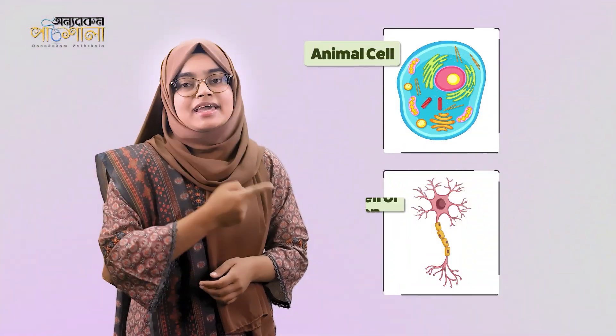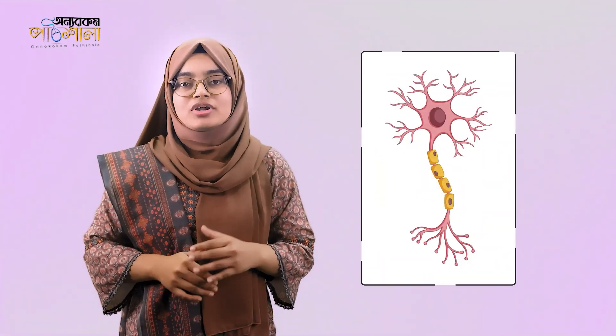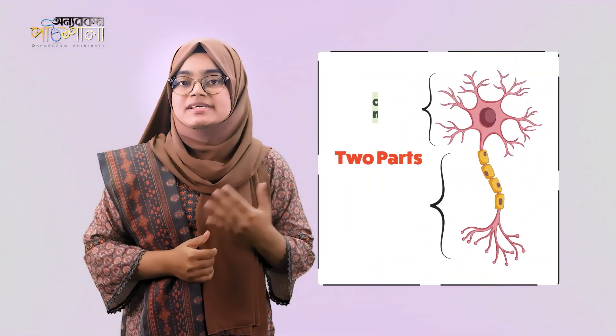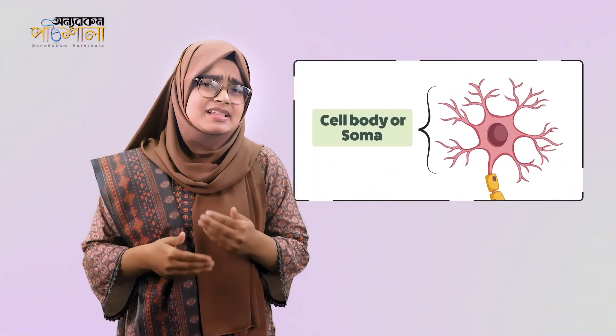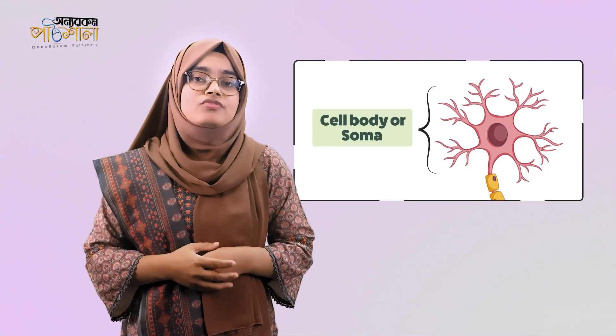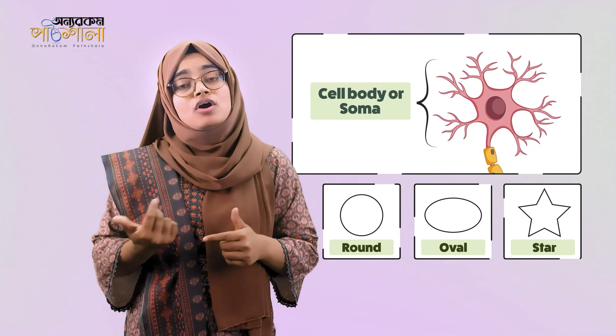Now let's discuss about the structure of the neuron. As it is a special type of cell specific for the nervous system, its structure is also different from a typical cell. Here you can see this is a typical animal cell and this is a nerve cell or neuron. The neuron is made up of two parts: cell body or soma, and elongated part or neurite. The cell body can be considered as the main part of the neuron, which can be of different shapes like round, oval, or star shape.